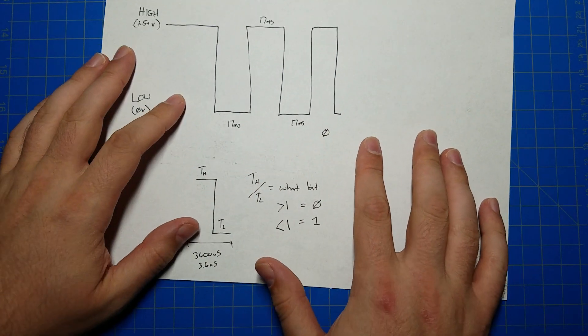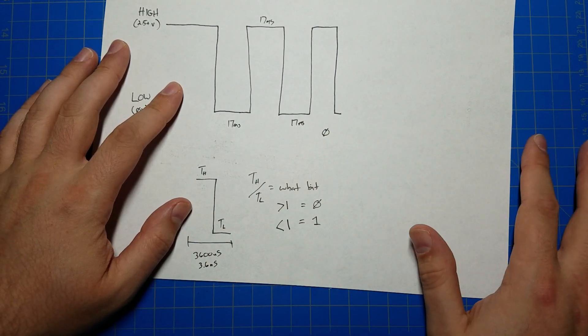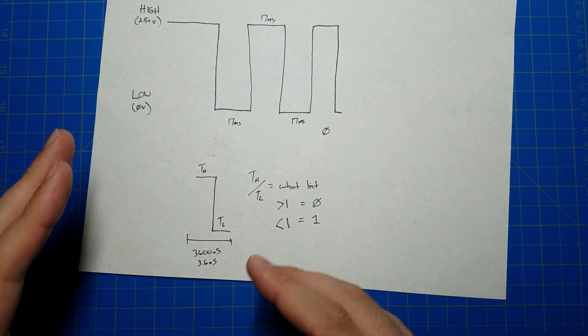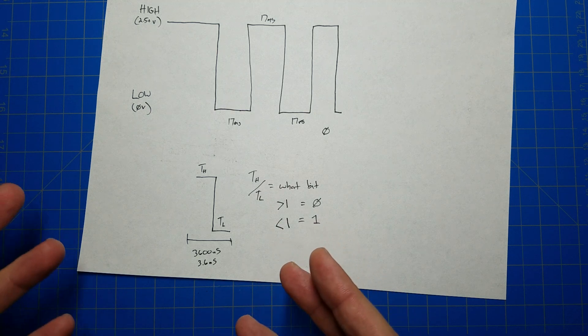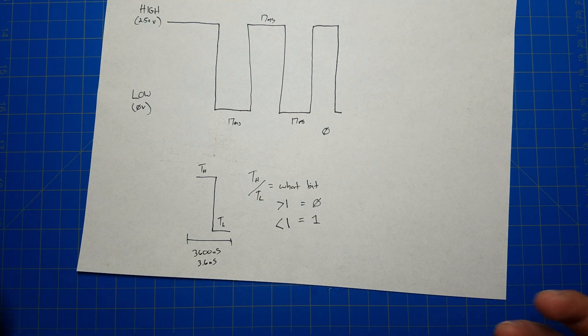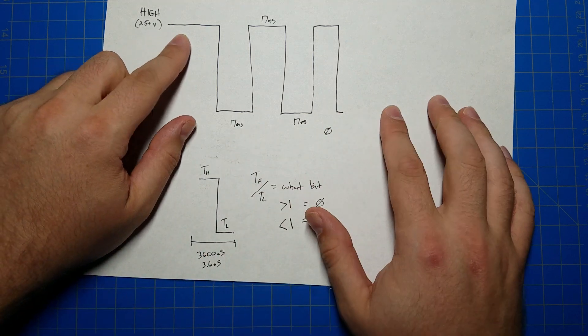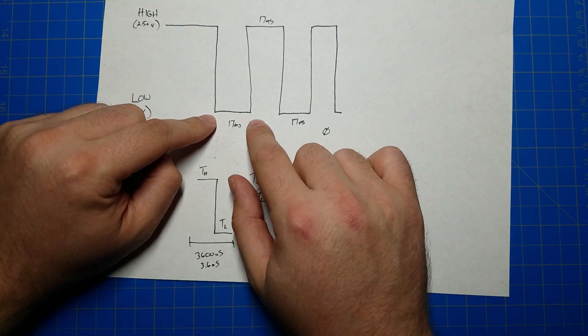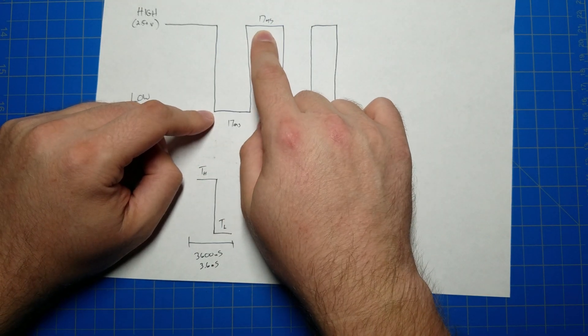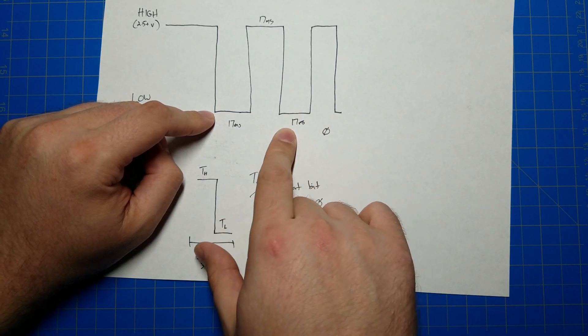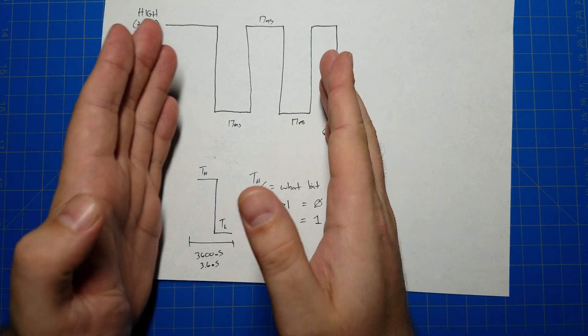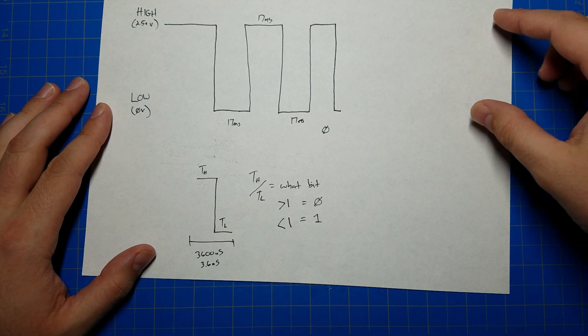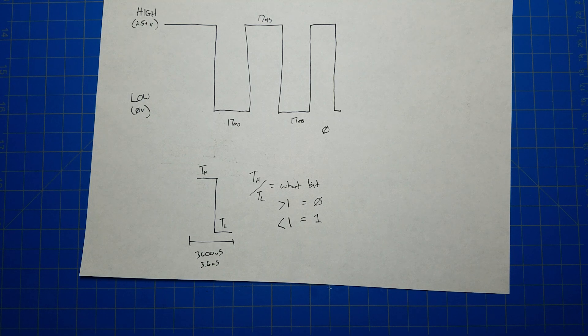The signal is being sent from the hilt to the blade. And the first thing it begins with is a sort of a signal to get the attention of the blade, to say, hey, a command is coming. Wake up. And all that is is that when it's normally idle, when nothing's going on, the data pin is high. And then it sets it low for 17 milliseconds. Then it sets it high for 17 milliseconds. And then it sets it low again for 17 milliseconds. After that, it's going to be a command of eight bits or one byte. And that is the command, that is all it is.